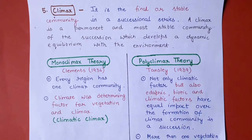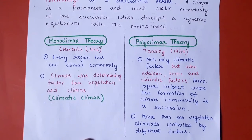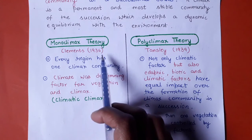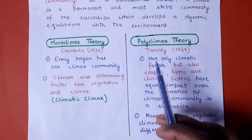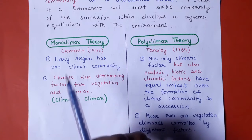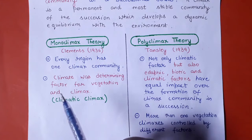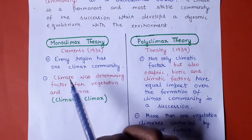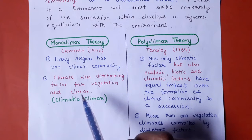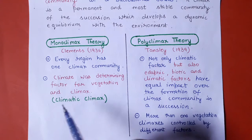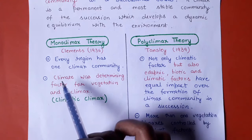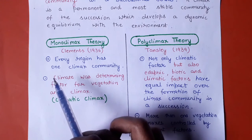There are two important theories related to the climax. The first is the monoclimax theory given by Clements in 1936, and the second is the polyclimax theory given by Tansley in 1939. According to Clements, every region has one climax community and it is basically influenced by climate. Climate was the main determining factor for the vegetation and the climax stage, which is why he coined the term 'climatic climax.'